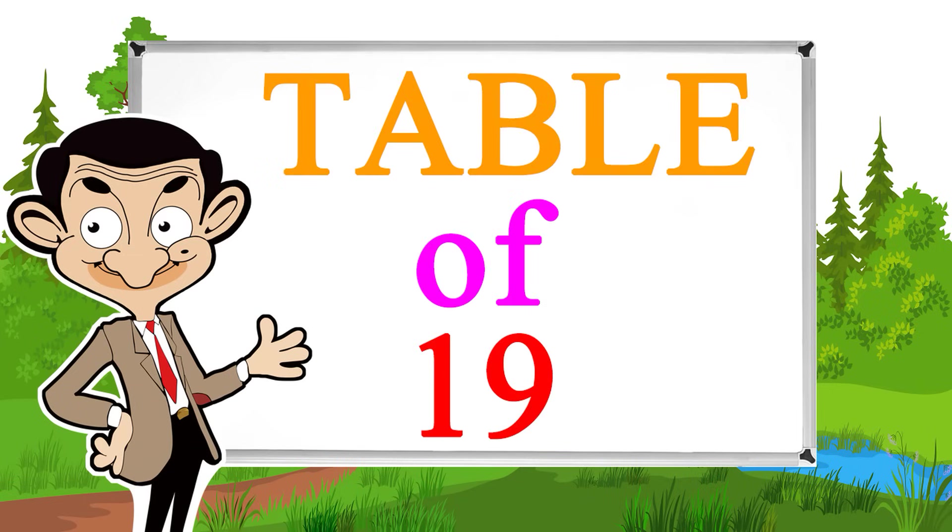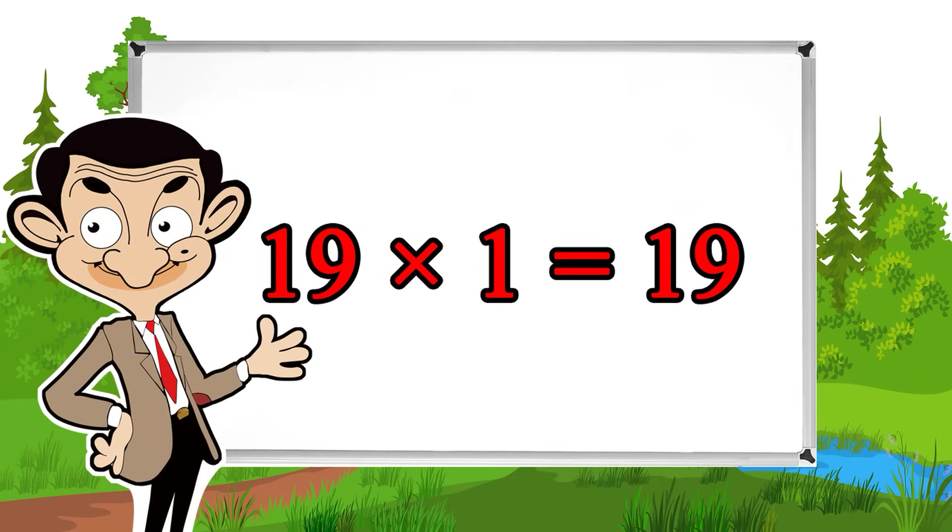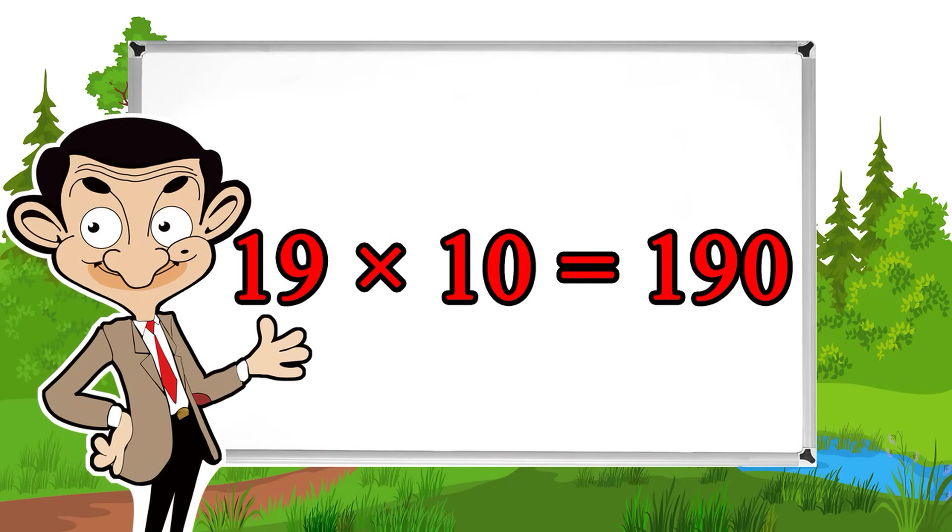19 times 1 equals 19, 19 times 2 equals 38, 19 times 3 equals 57, 19 times 4 equals 76, 19 times 5 equals 95, 19 times 6 equals 114, 19 times 7 equals 133, 19 times 8 equals 152, 19 times 9 equals 171, 19 times 10 equals 190.